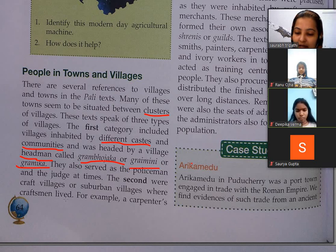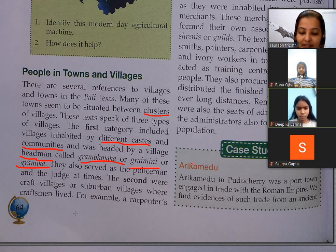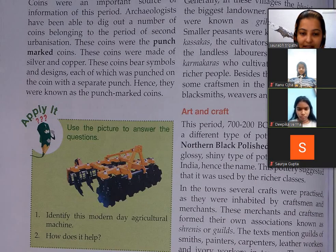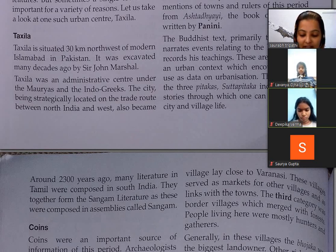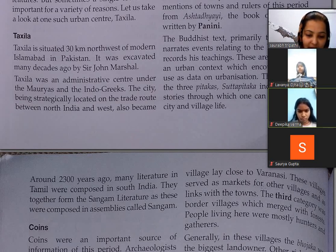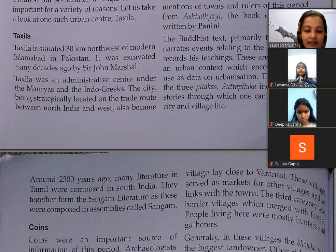Second category mein craft villages the jahan craftsmen — yaani shilpkaar — rehte the. For example, a carpenters' village lay close to Varanasi. These villages served as markets for other villages and as links with the towns.